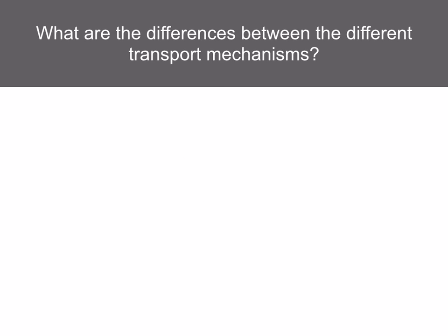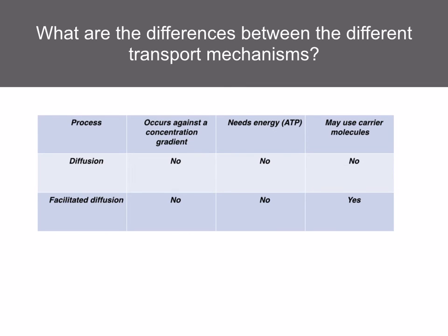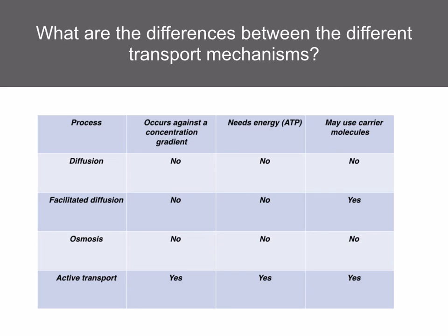What are the differences between the different transport mechanisms? This table summarizes the differences. Diffusion: does it occur against a concentration gradient? No. Does it need energy from ATP? No. Does it use carrier molecules? No. Facilitated diffusion: against a concentration gradient? No. Need ATP? No. Use carrier molecules? Yes. Osmosis: against a concentration gradient? No. Need energy? No. Use carrier molecules? No. Active transport: against a concentration gradient? Yes. Need energy from ATP? Yes. Use carrier molecules? Yes.